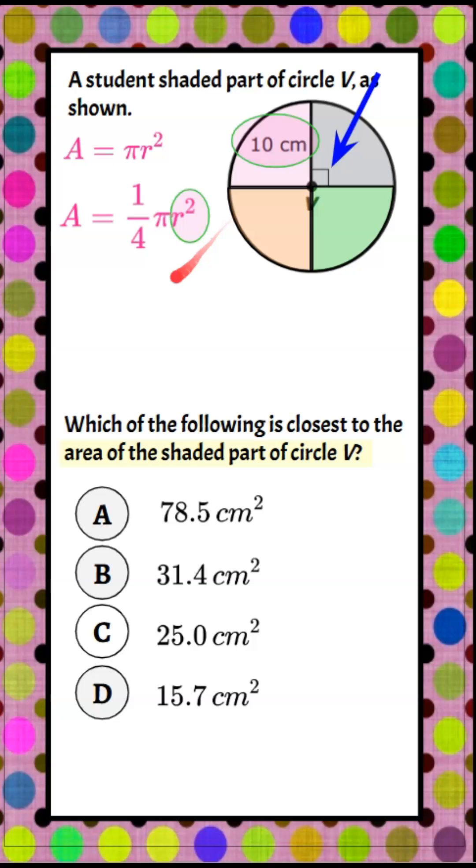Our r is 10 centimeters. One-fourth times pi, which is 3.14, times r squared is going to be 10 squared because our radius from center to the outer edge of the circle is 10 centimeters.